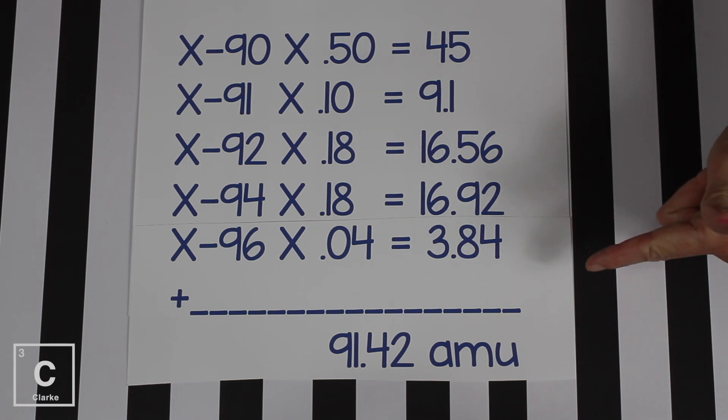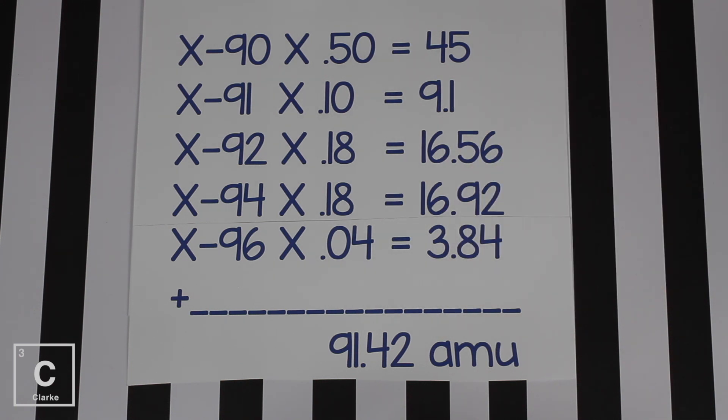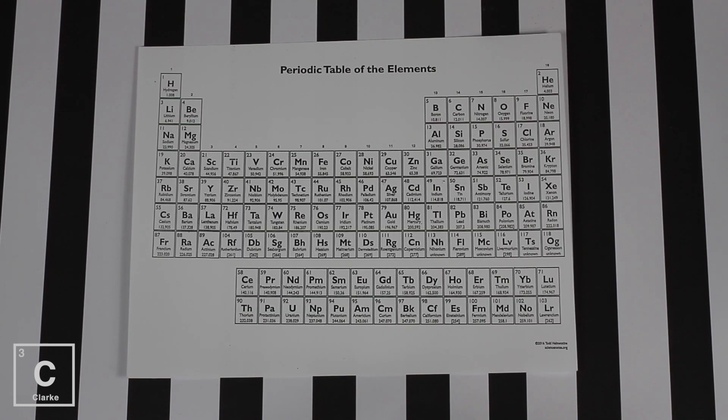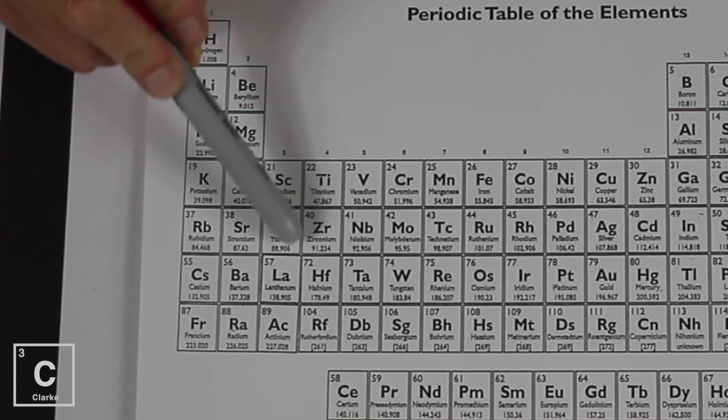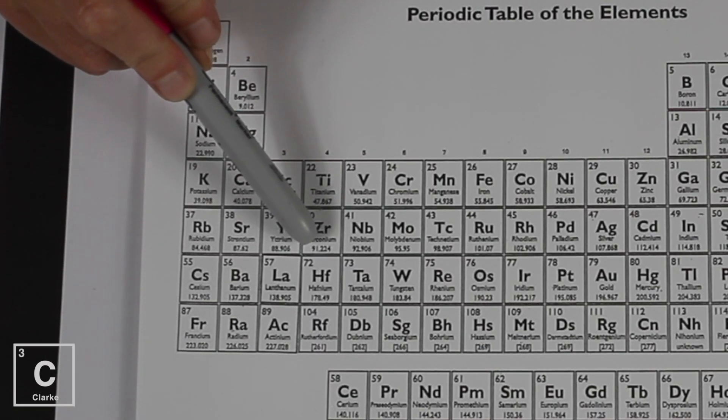And again, we just add them all up to get the average atomic mass of 91.42. The whole reason for mass spectrometer is to find the unknown. So now we would go to the periodic table. It's not exactly on, but 91.42, that's the number we're looking for. And look here at zirconium, 91.224.